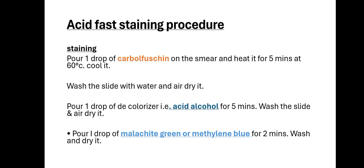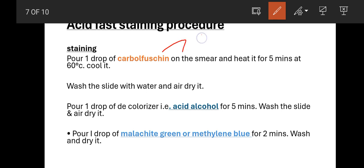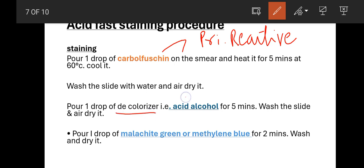Now the actual staining procedure: on the prepared slide, first add carbol fuchsin, which is our primary reactive ingredient. Provide heat for 5 minutes. Then wash and dry the slide. Then add the decolorizer, which is acid alcohol. Wash and dry the slide again.